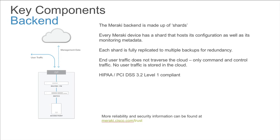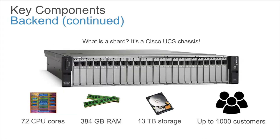Every Meraki managed device connects back to a shard of the Meraki cloud backend, which acts as the authoritative source of device software configuration as well as the host for monitoring and analytics data for that device and all other devices in the same management organization or customer account. Every shard has its own warm spare backup in the same data center in case of hardware failure, and a replicated backup in a different data center in case of data center ISP outage, natural disaster, or other data center-wide issue. User traffic is not proxied through or stored in the cloud — only management and monitoring traffic passes between the device and its shard. These shards are actually Cisco UCS hardware, and each shard can host up to 1,000 customers, though some shards may hold as few as a single customer for very large accounts.